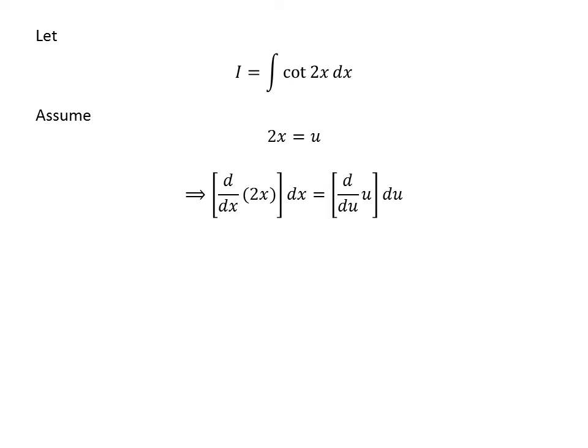Taking differential of both sides, we get differentiation of 2 times x with respect to x into differential of x is equal to differentiation of u with respect to u into differential of u. As we know, differentiation of 2 times x with respect to x is equal to 2 and differentiation of u with respect to u is equal to 1.